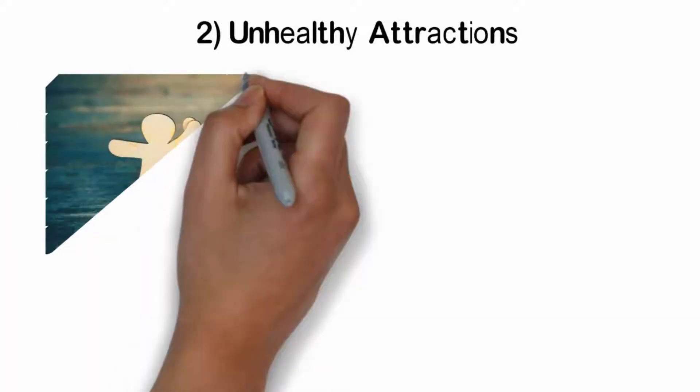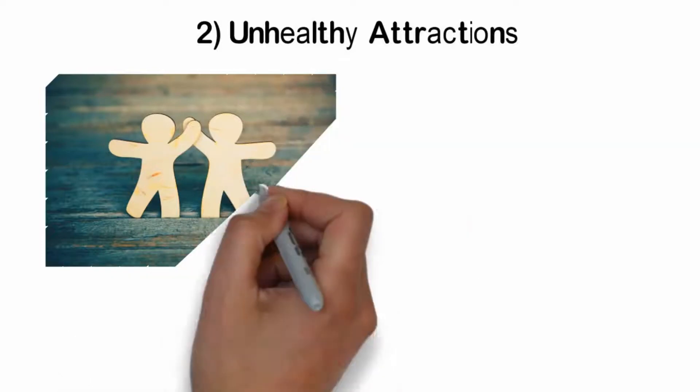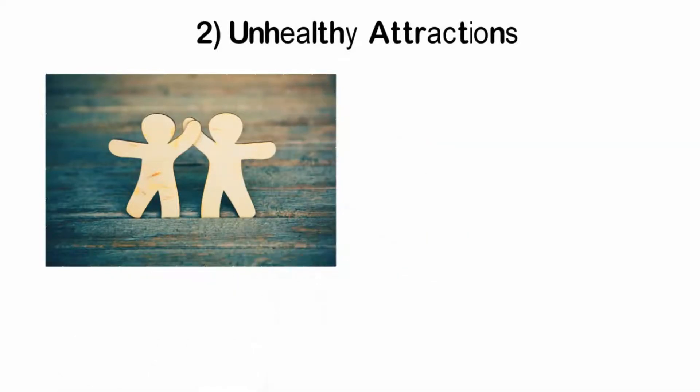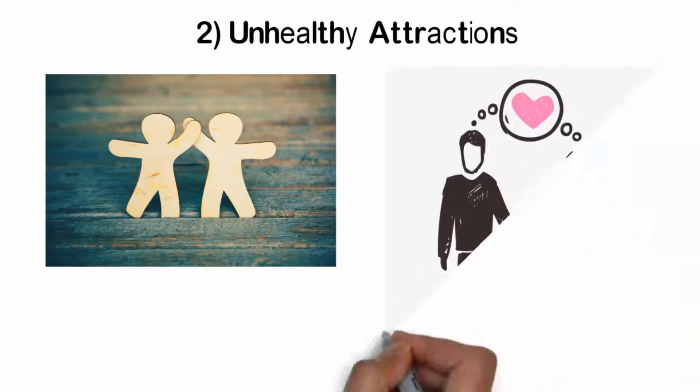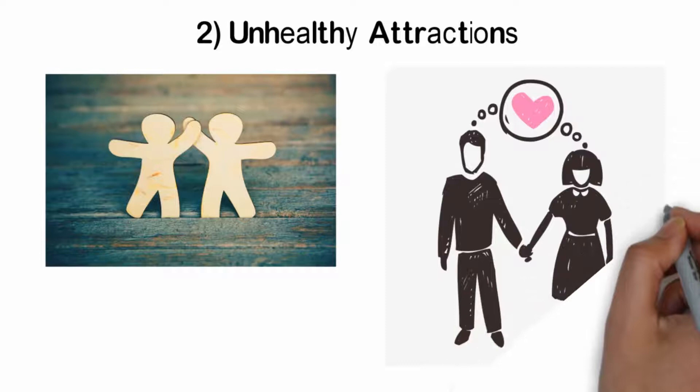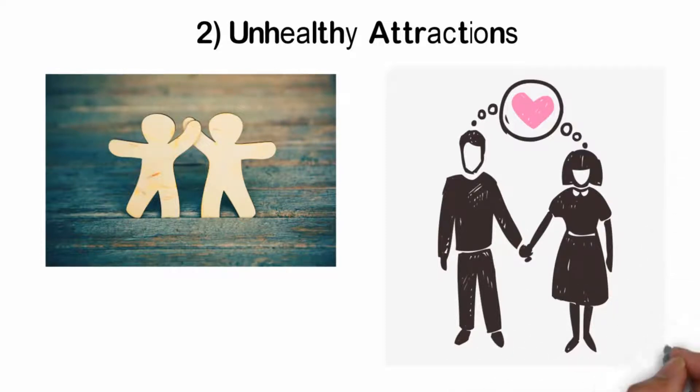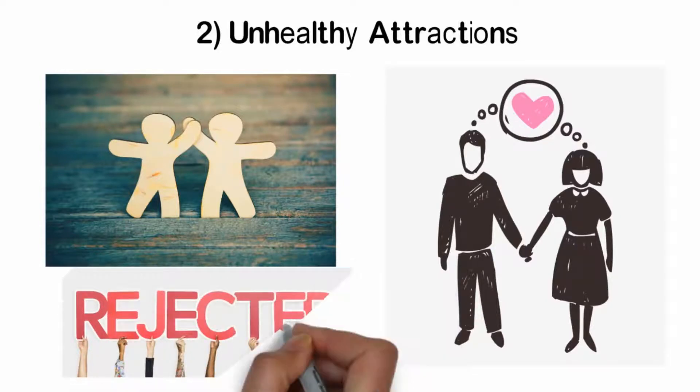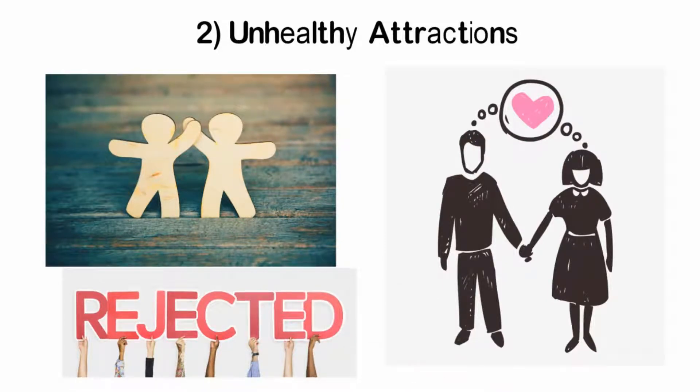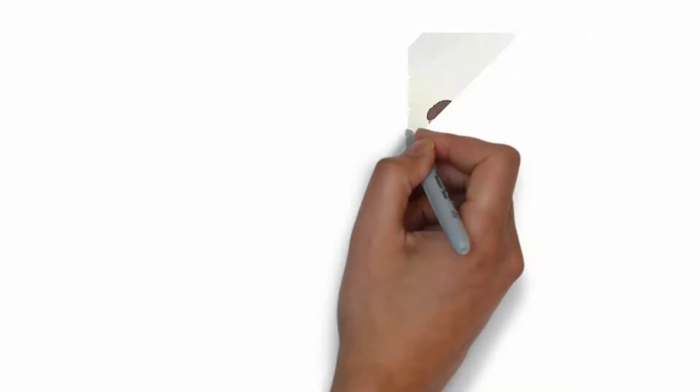Number 2. Unhealthy Attractions. When we act on our defenses, we tend to choose less-than-ideal relationship partners. We may establish an unsatisfying relationship by selecting a person who isn't emotionally available. Because this process is largely unconscious, we often blame our partner for the relationship's failed outcome. We tend to feel devastated or hurt by the repeated rejections without recognizing that we are actually seeking out this pattern. Why do we do this?